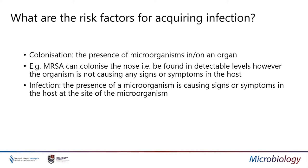When discussing risk factors for acquiring infection, we often talk about colonization — the presence of microorganisms in or on an organ. This merely is the detection of an organism on the human. In the laboratory, we see lots of organisms on an agar plate when we culture specimens from our patients, but often these just represent the normal flora of that person. They are not causing infection. For example, at least 30% of our population can be colonized with MRSA — methicillin-resistant Staphylococcus aureus — in their nose, without causing any harm.